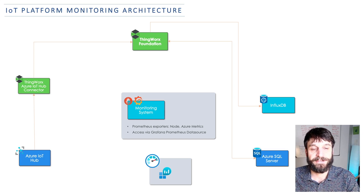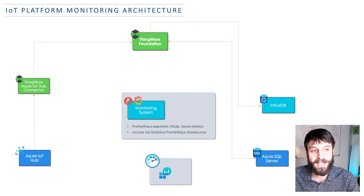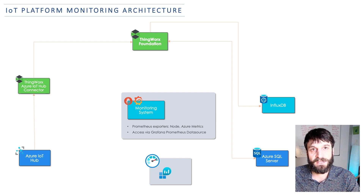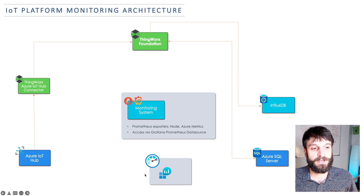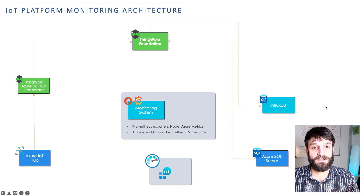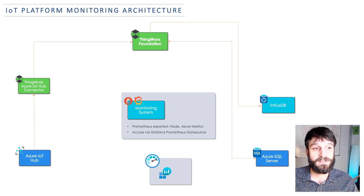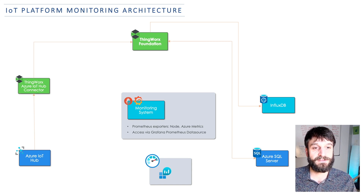Grafana is doing all the dashboarding — getting metrics from Prometheus, or pulling them from Azure Metrics for resources already in Azure, as well as from InfluxDB, because InfluxDB's internal metrics are stored in an internal database. Grabbing them where they are is a lot easier than funneling them to Prometheus.